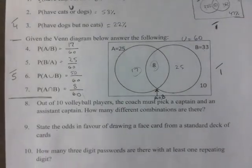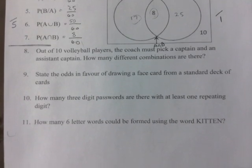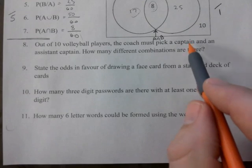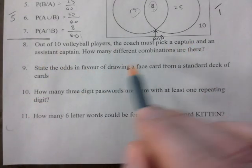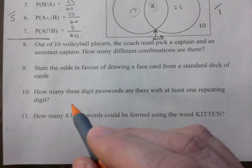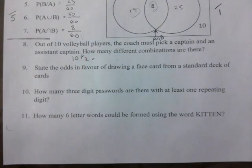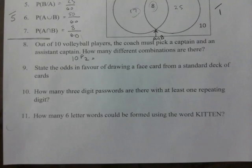That's something I haven't explicitly asked you for, but remember that's always still there. Out of 10 volleyball players, the coach must pick a captain and an assistant captain. How many combinations are there? And this would be a permutation scenario because of specific positions, right?